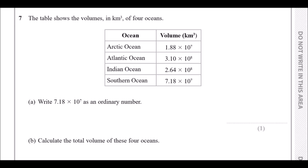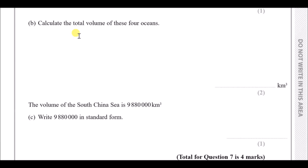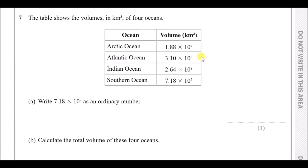Welcome back to another set. We'll be going through the next set of questions from number seven all the way hopefully to number eleven. The table shows the volumes in kilometers cubed of four oceans: the Arctic, Atlantic, Indian, and Southern oceans. All the results are given in standard form.